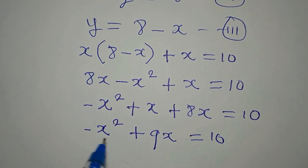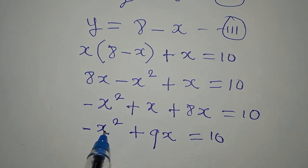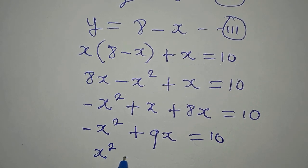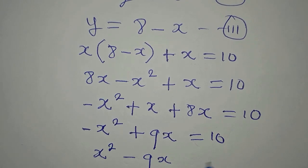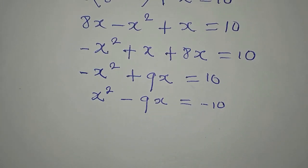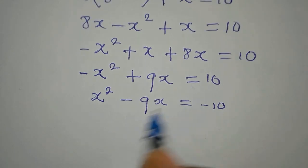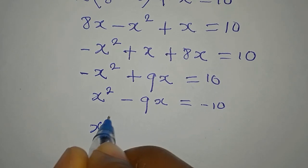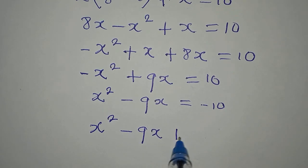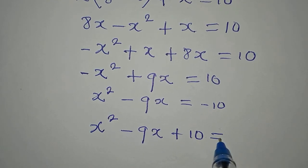Now we multiply all through by negative 1. So this will turn to positive, this will become negative 9x, and this becomes negative 10. Bring this to the left. So we have x squared minus 9x plus 10 equals 0.